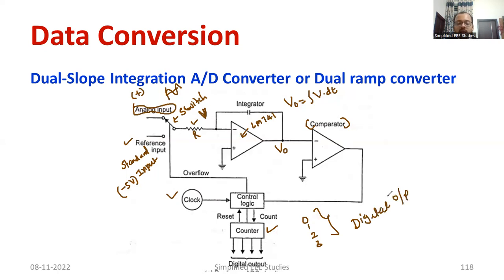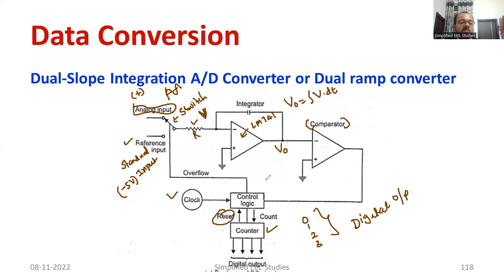The output of the counter is definitely in the form of digital pulses. So the input is the analog input and the output is the digital output. Once counting is completed, there is a reset that automatically resets the system, returns to the logic circuit, and the process is repeated. This type of method is known as dual slope integration analog to digital conversion.